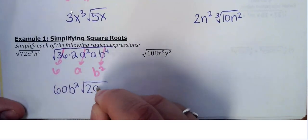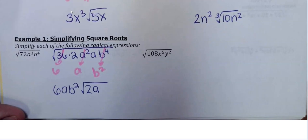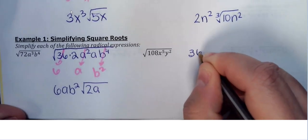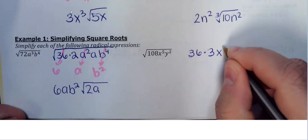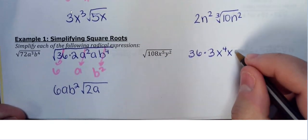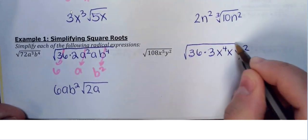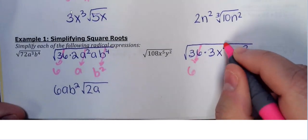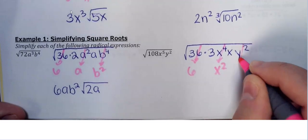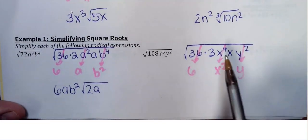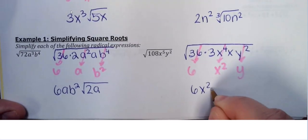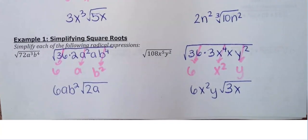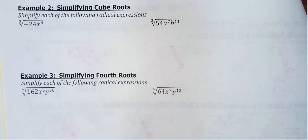For √(108x⁵y²): the biggest perfect square going into 108 is also 36, so 108 = 36×3. x⁵ is not a perfect square, so I break it apart; y² has an even exponent so I leave it alone. Square root: 36 comes out as 6, x⁴ comes out as x², y² comes out as y. Left underneath are 3 and x. The result is 6x²y·√(3x).